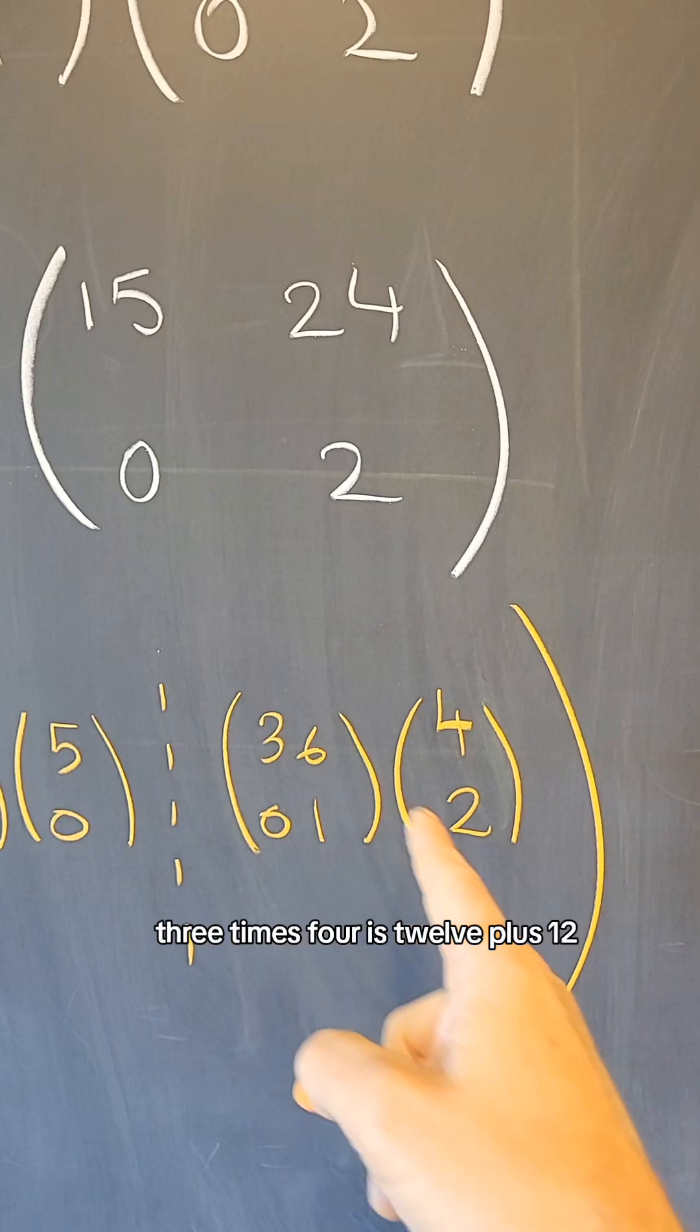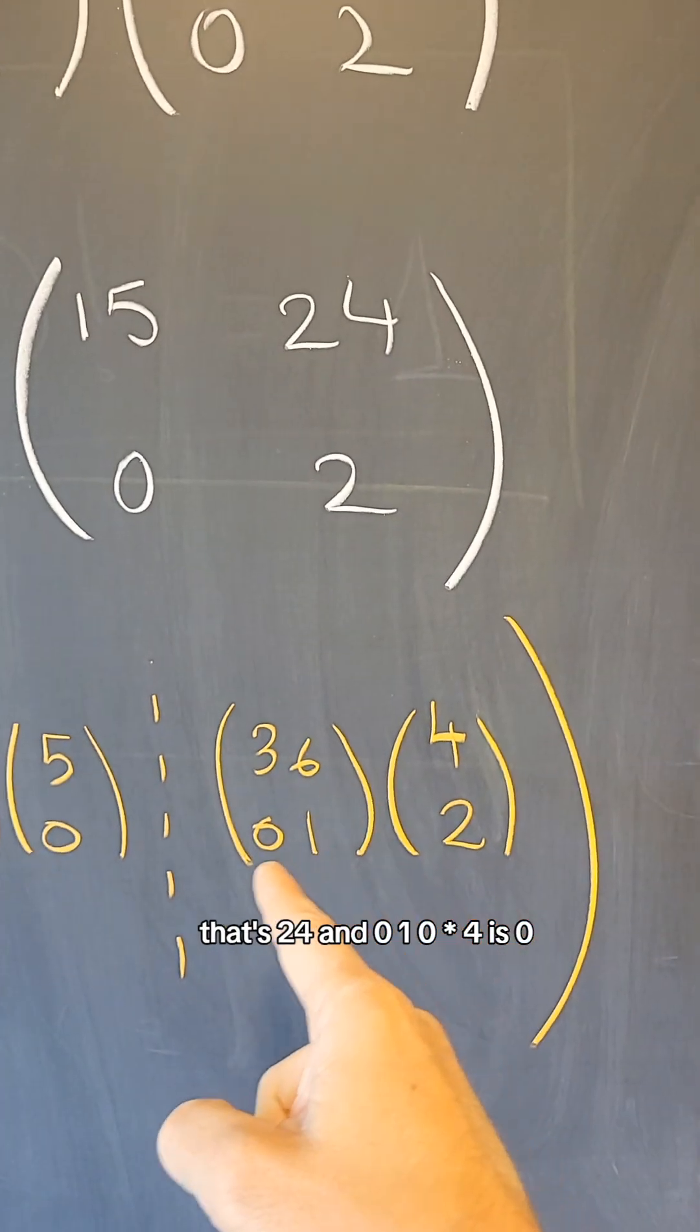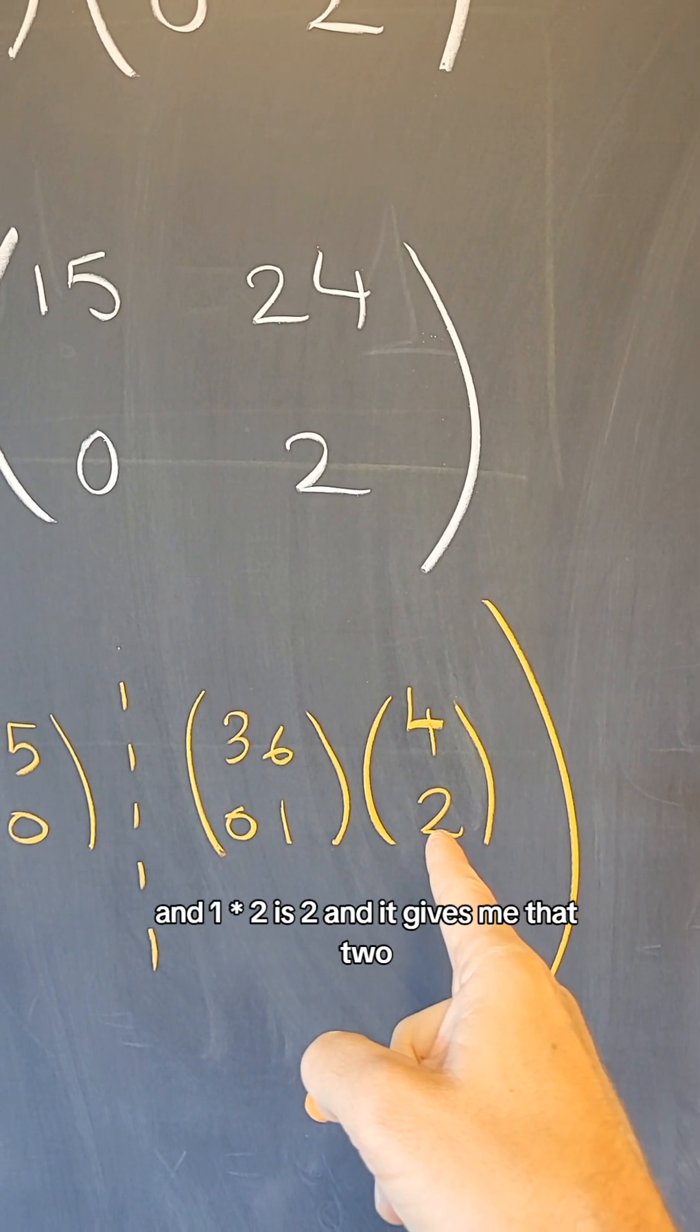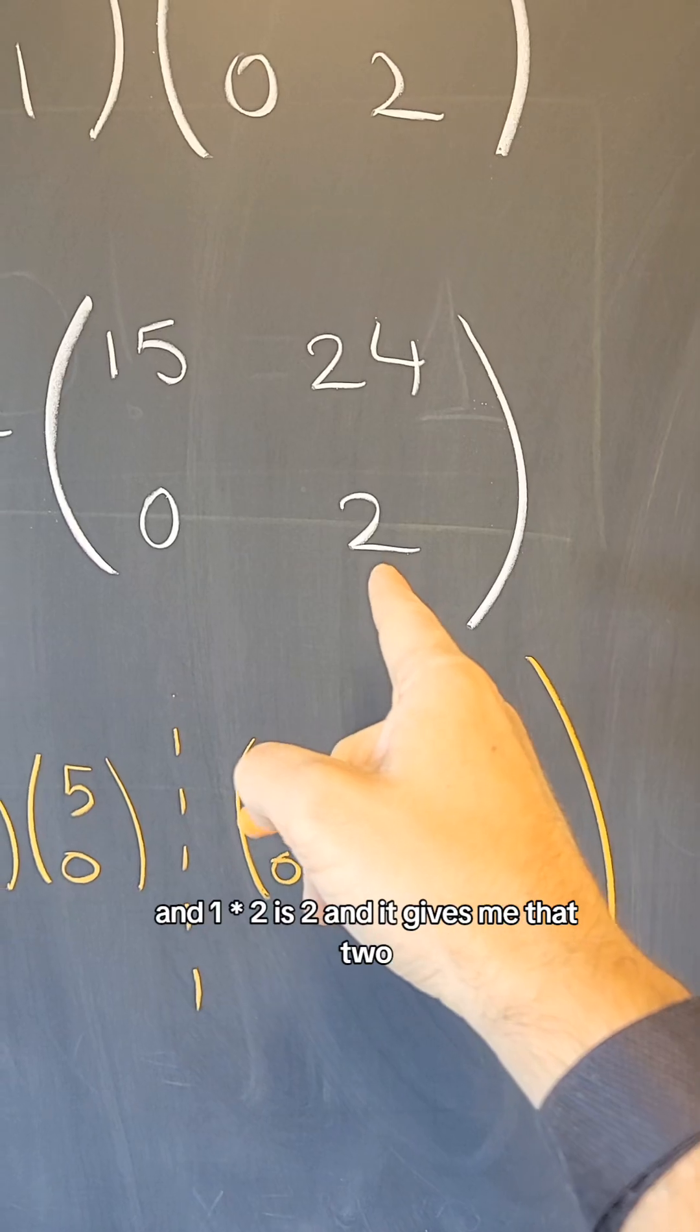3 times 4 is 12, plus 12, that's 24, and 0 times 4 is 0, and 1 times 2 is 2, and it gives me that 2.